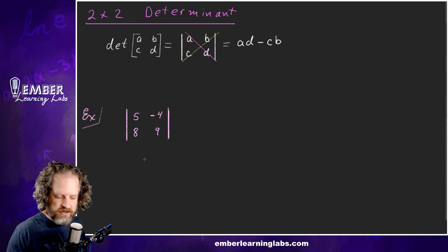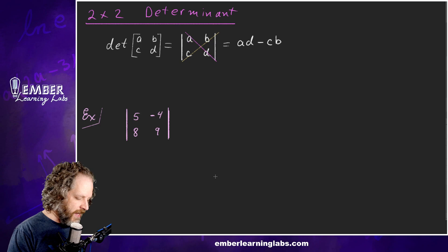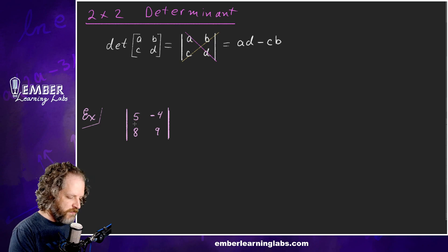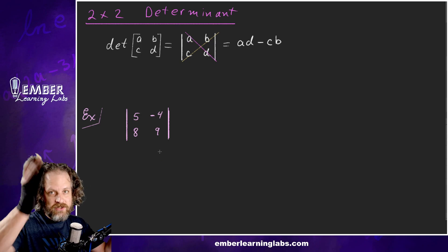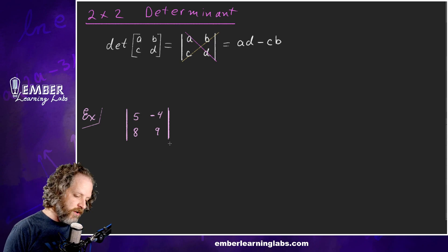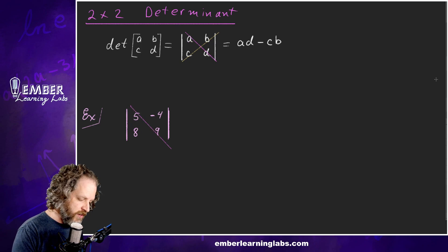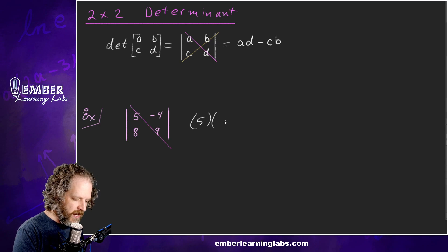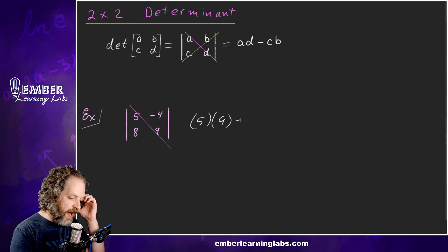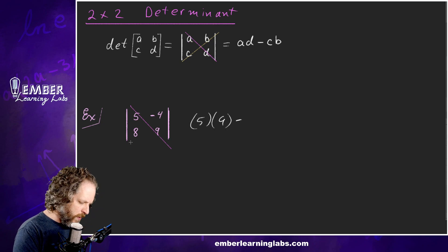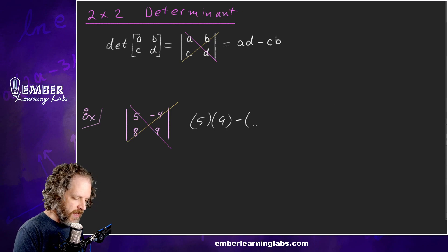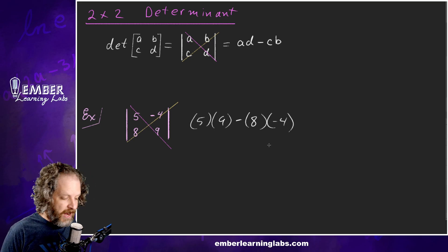Let's put some understanding on that by looking at this example. We're supposed to find the determinant of this matrix — we know that because of those straight up-and-down bars. So we're going to multiply the down diagonal, which is 5 times 9, and then subtract the going-up diagonal.